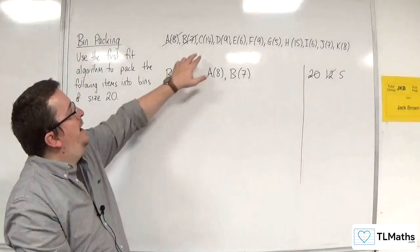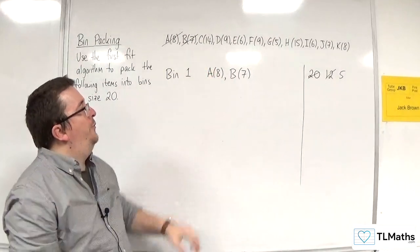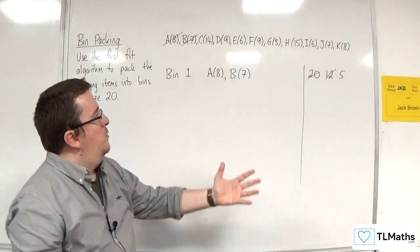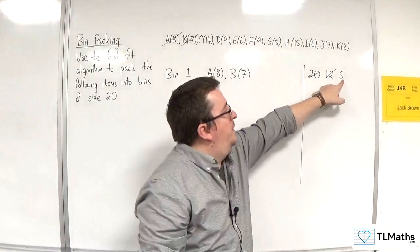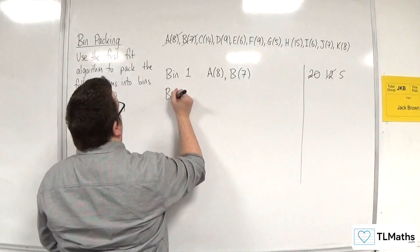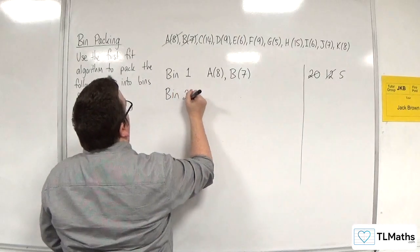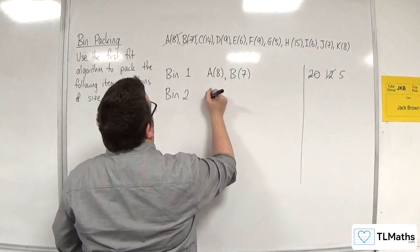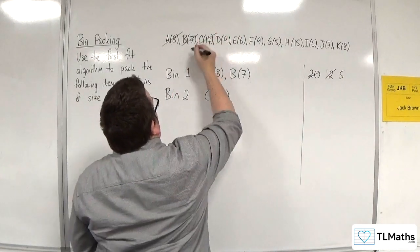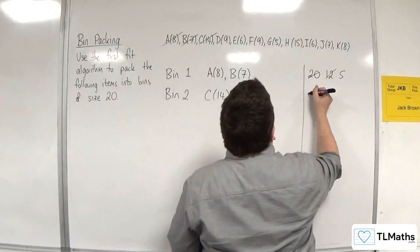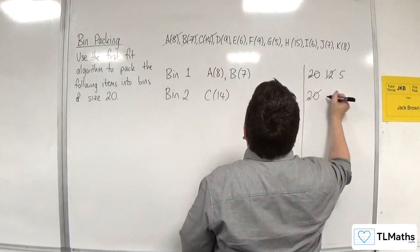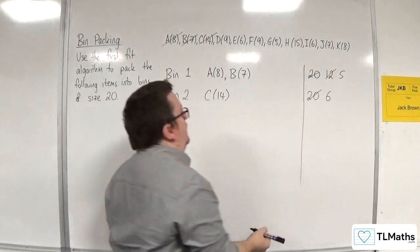C is coming along now. It's of size 14. Can it go into bin one? No, because I've only got five left over. So I'm going to have to open up bin two, and C is going to have to go in there. So we originally had 20 but we're now down to six.